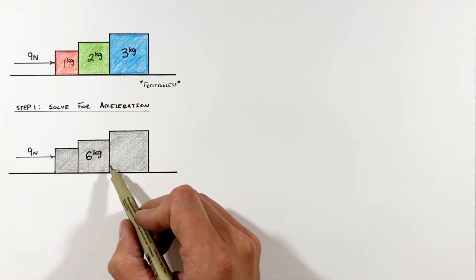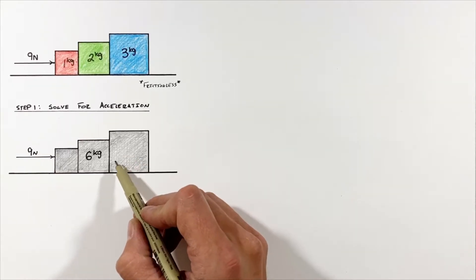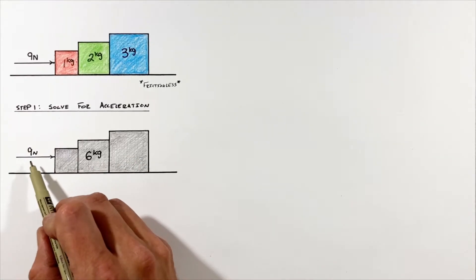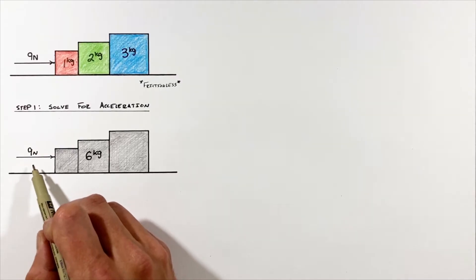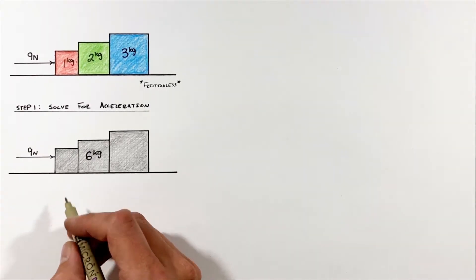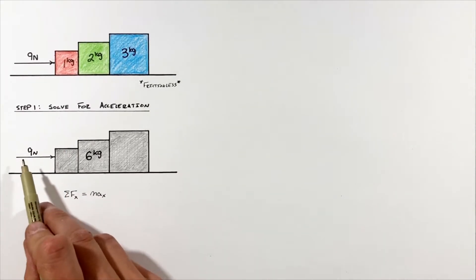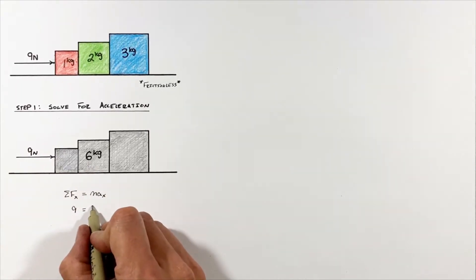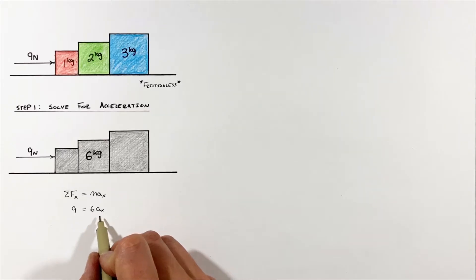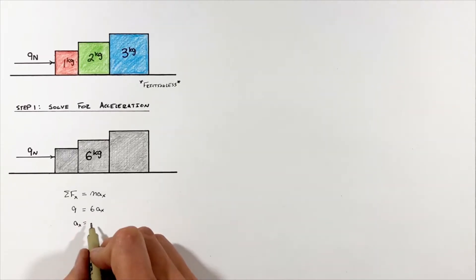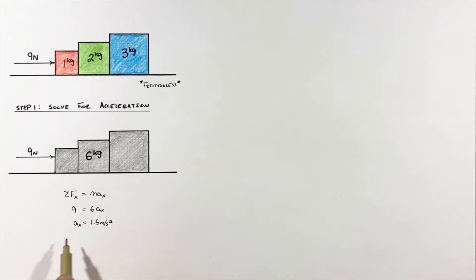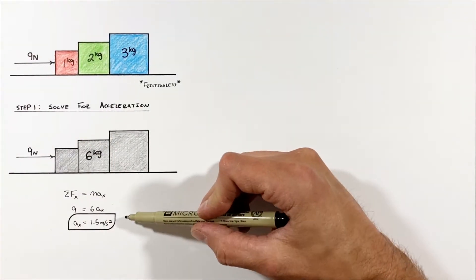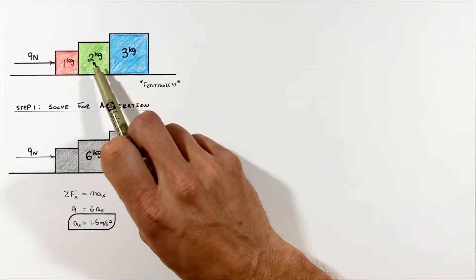Since all three blocks must move together, we can treat them as a single six-kilogram block being pushed by a nine-newton force. Applying Newton's second law horizontally, we have a net force of nine newtons causing six kilograms to accelerate, and we find the horizontal acceleration is 1.5 meters per second squared. This is the acceleration of all three blocks.